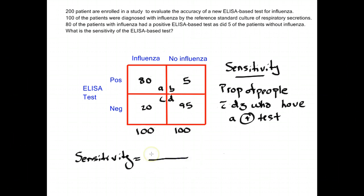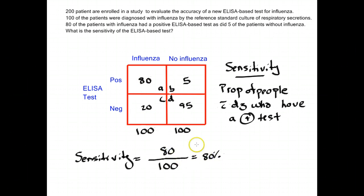The proportion of people with disease means everybody with disease goes in the denominator. There are 100 people with influenza, so 100 goes in the denominator. I need to know what percentage of those 100 people had a positive test — that's 80. So 80 out of 100 is 80%. The sensitivity of this new ELISA-based test is 80%, meaning it will pick up 80% of people with influenza and conversely miss 20% of them.